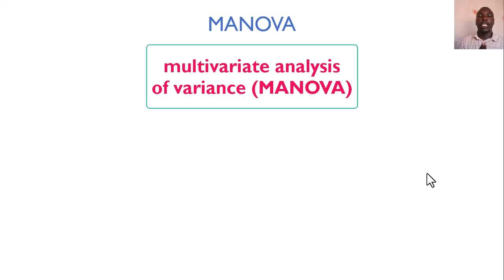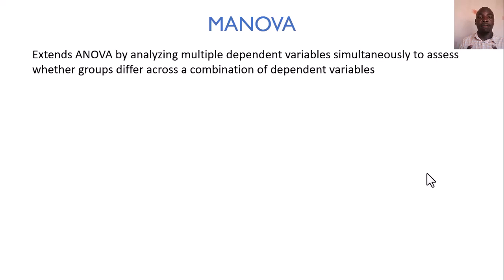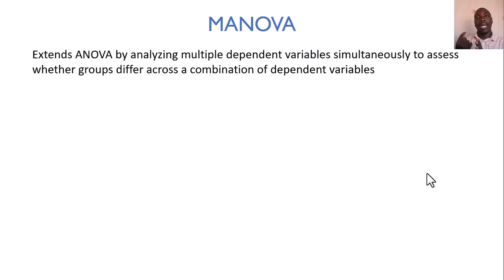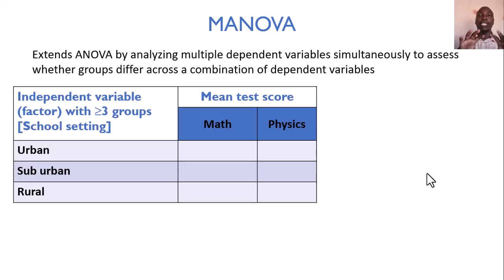MANOVA, multiple analysis of variance, extends ANOVA by analysing multiple dependent variables simultaneously to assess whether groups differ across a combination of dependent variables. For one-way ANOVA, two-way ANOVA, and ANCOVA we dealt with one numerical outcome, but for MANOVA we move to having more than one outcome. Rather than predicting a single test score, we are predicting whether school setting influences student performance in mathematics, in physics, and potentially other subjects — the outcome is numerical but not just one single variable.